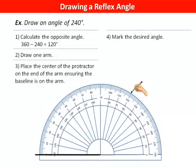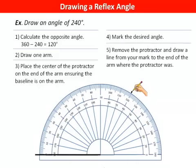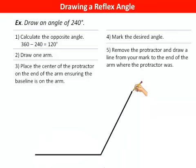Mark the desired angle, remove the protractor, and connect the mark to the original arm. The angle on the opposite side will be 240 degrees.